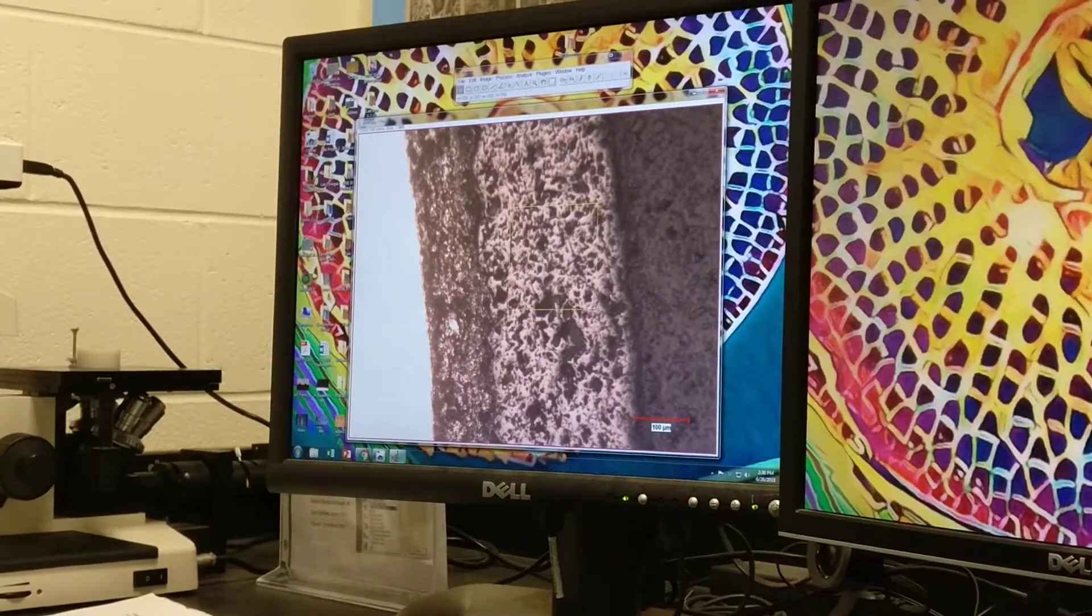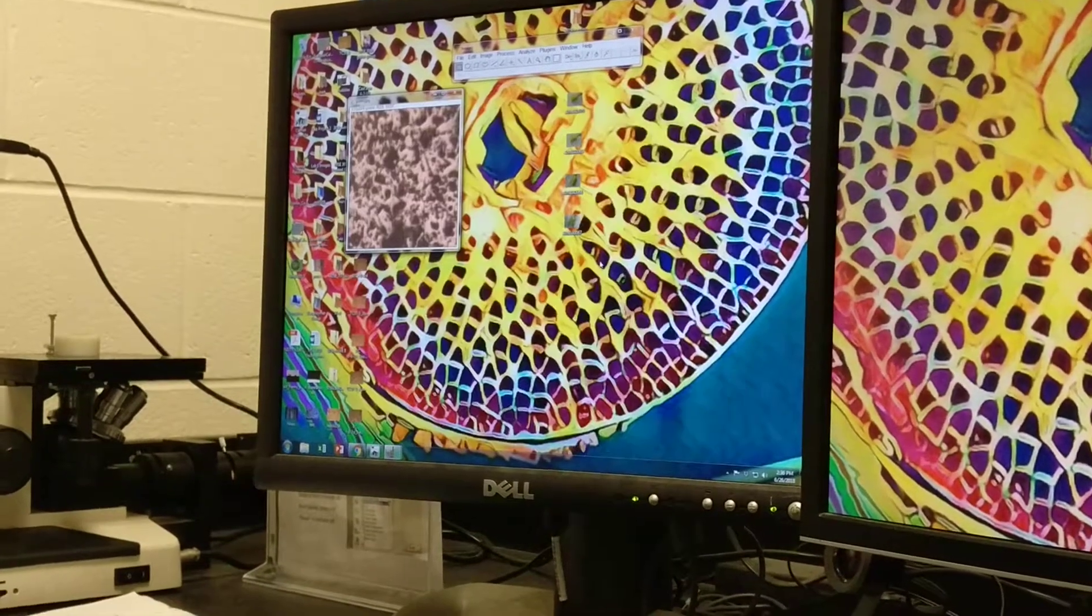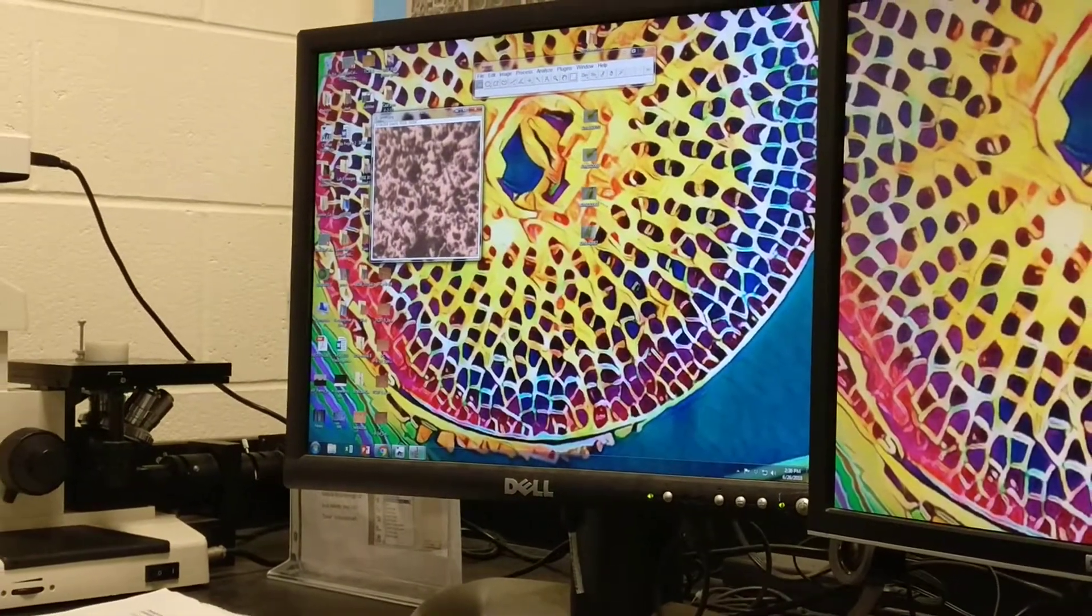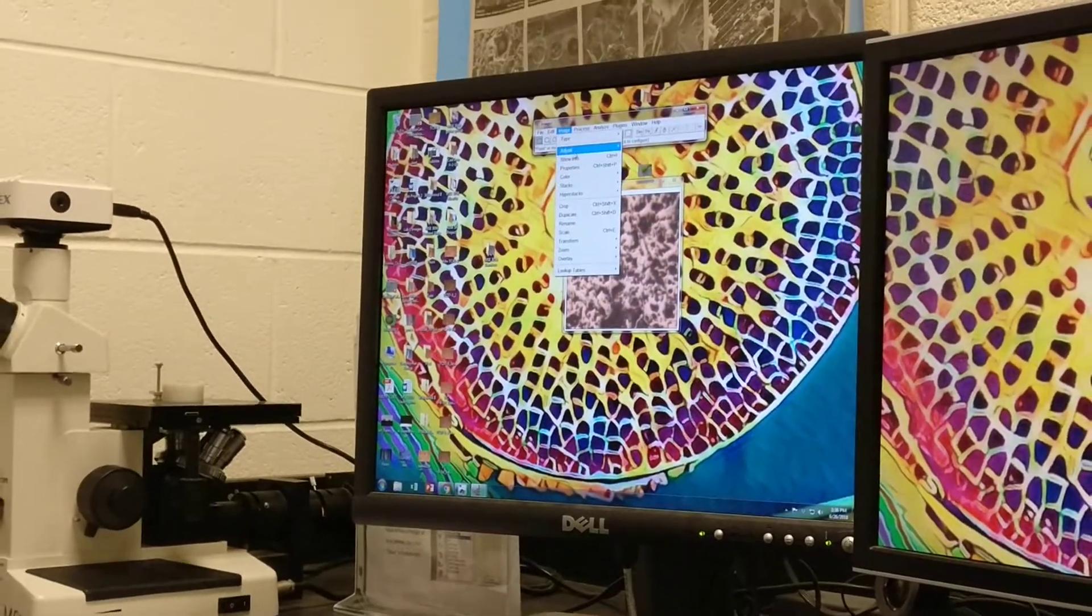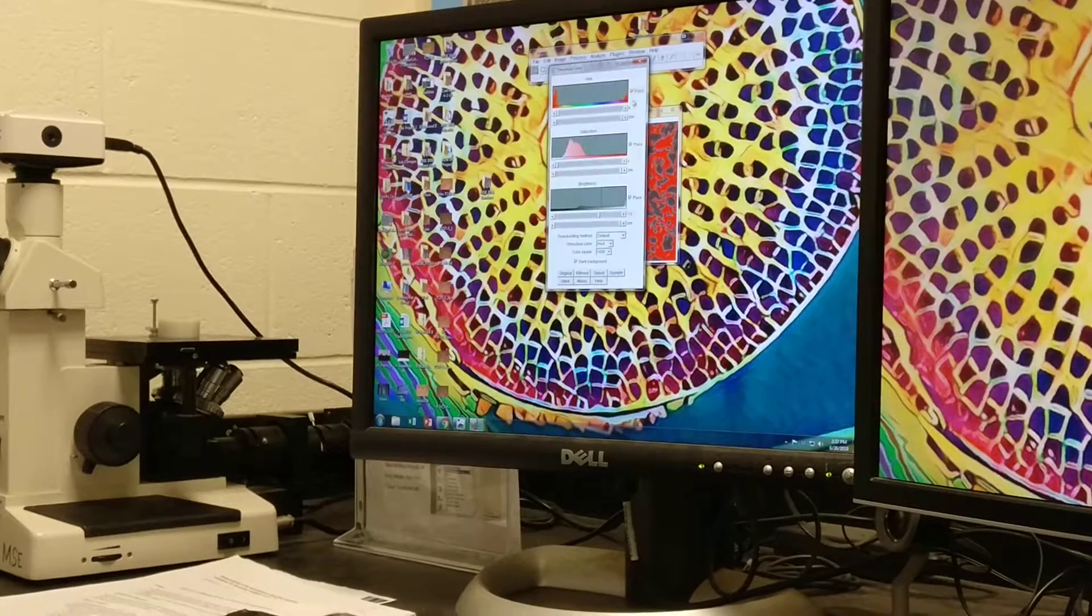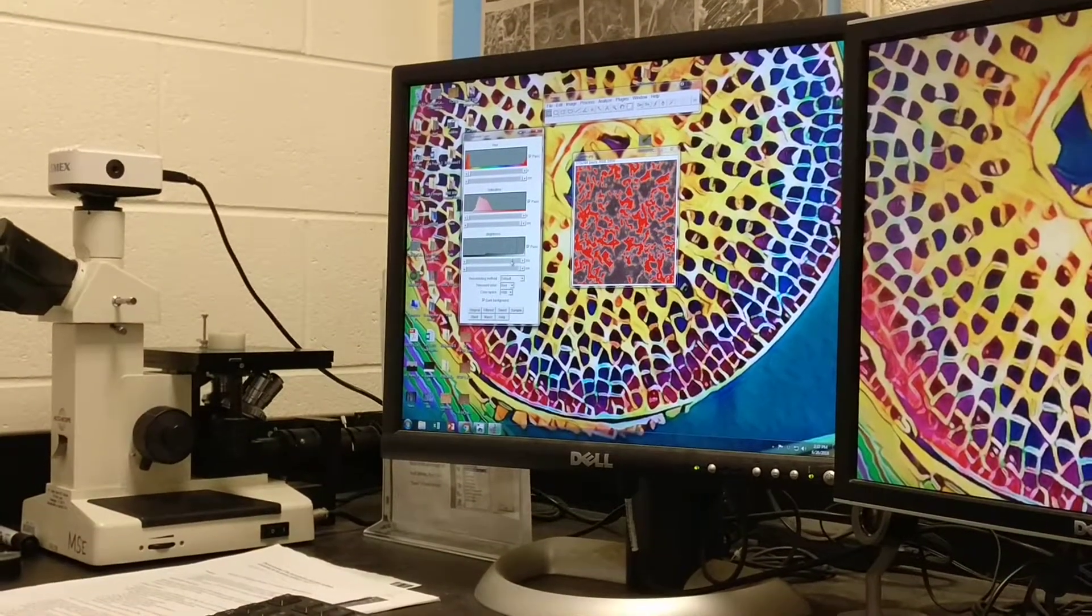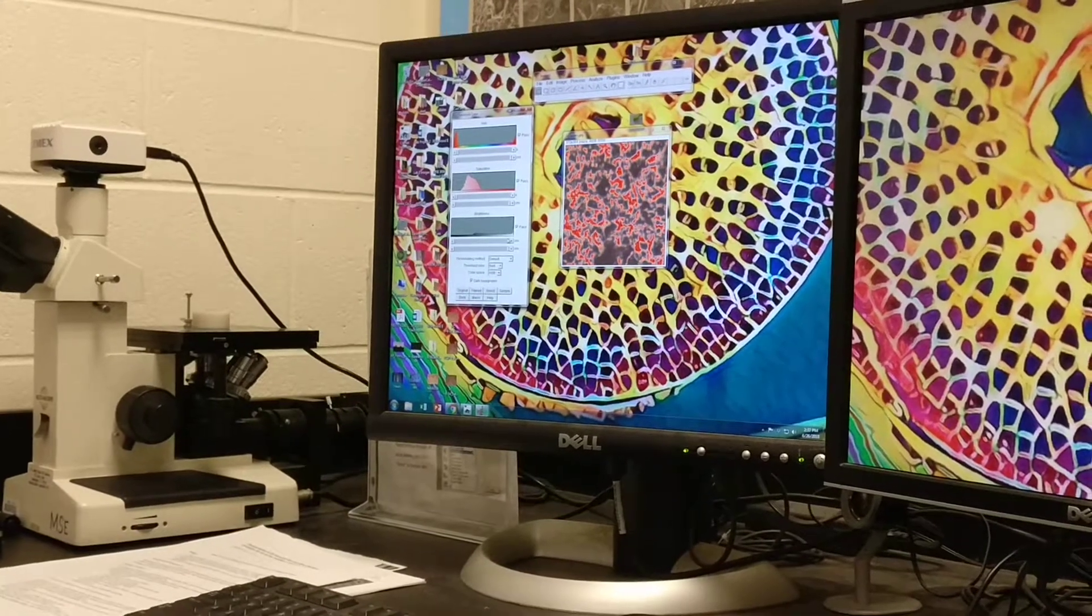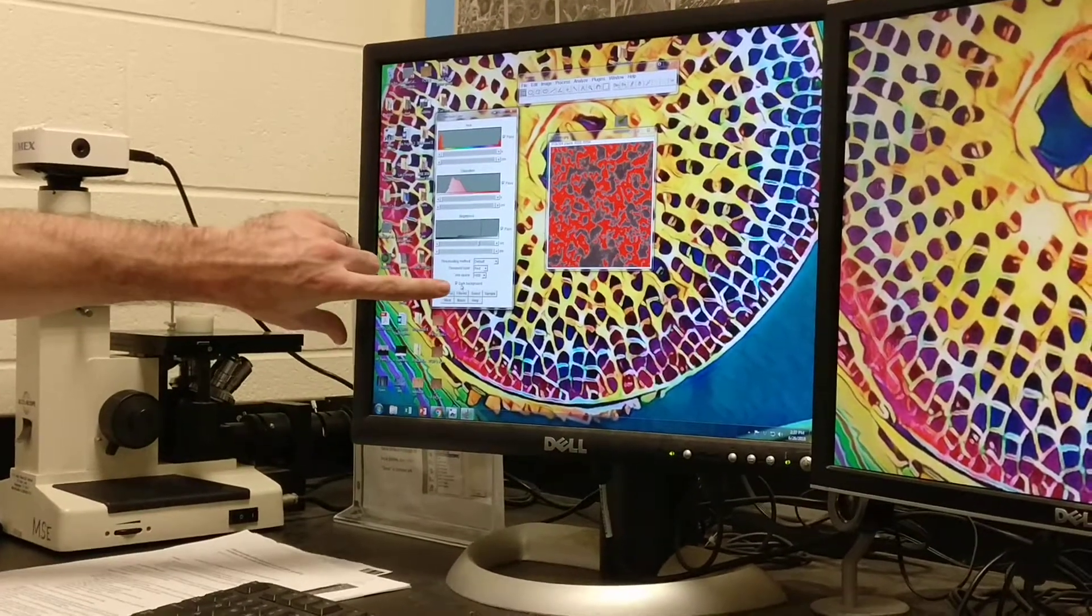First thing is we're going to select the area of interest which is in that layer with the rectangle box tool. We're going to type on the keyboard ctrl shift X which will crop that area we've selected. We're going to do image, adjust, and threshold. With this we are going to use these sliders on the histogram to select the area that is dark.